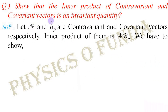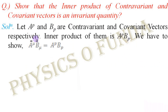Now we have to show that the inner product of a contravariant and covariant vector is an invariant quantity — meaning the form of the inner product remains unchanged in both the unbarred and barred coordinate systems. We consider A^p and B_p as contravariant and covariant vectors respectively, so the inner product is A^p B_p. If this quantity is to be invariant, we have to show that Ā^μ B̄_μ is equal to A^p B_p.